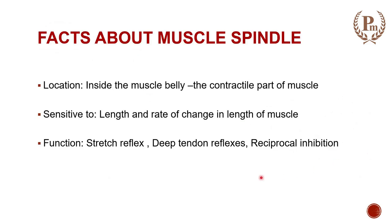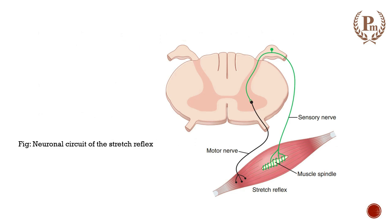Three key facts about muscle spindles: they are located inside the muscle belly among the extrafusal fibers. Their functions include: sensing the change in muscle length and the rate of change, involvement in stretch reflexes and deep tendon reflexes, importance for muscle tone, importance for posture, and smoothening of muscle movement. Understanding the stretch reflex helps us fully appreciate the functions of the muscle spindle.